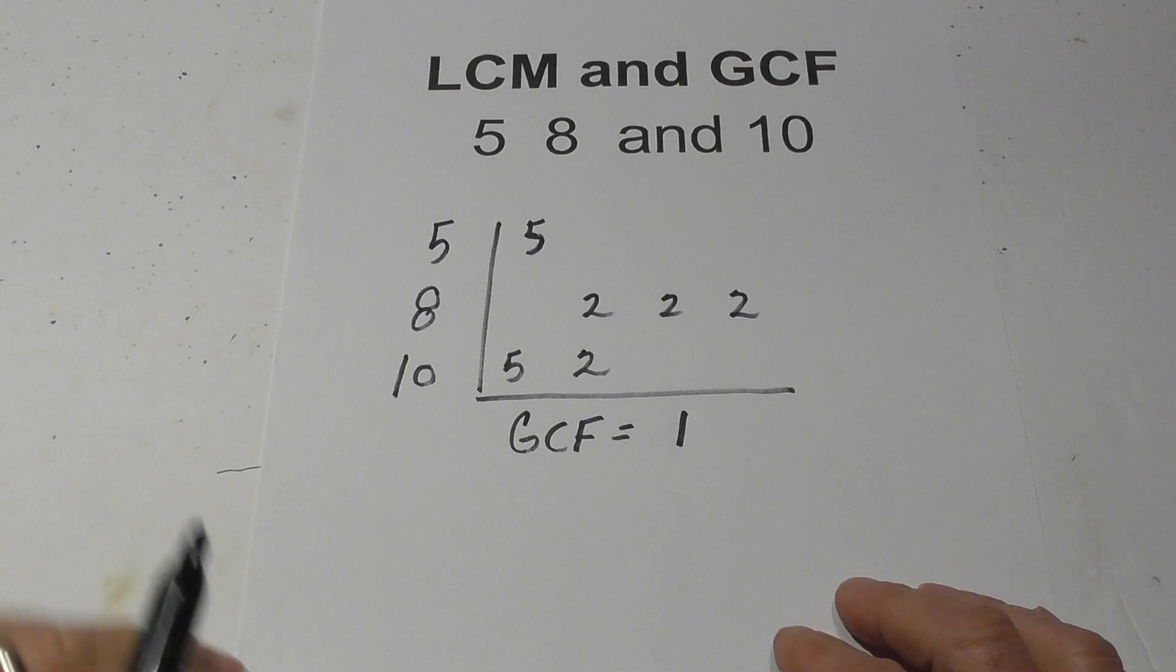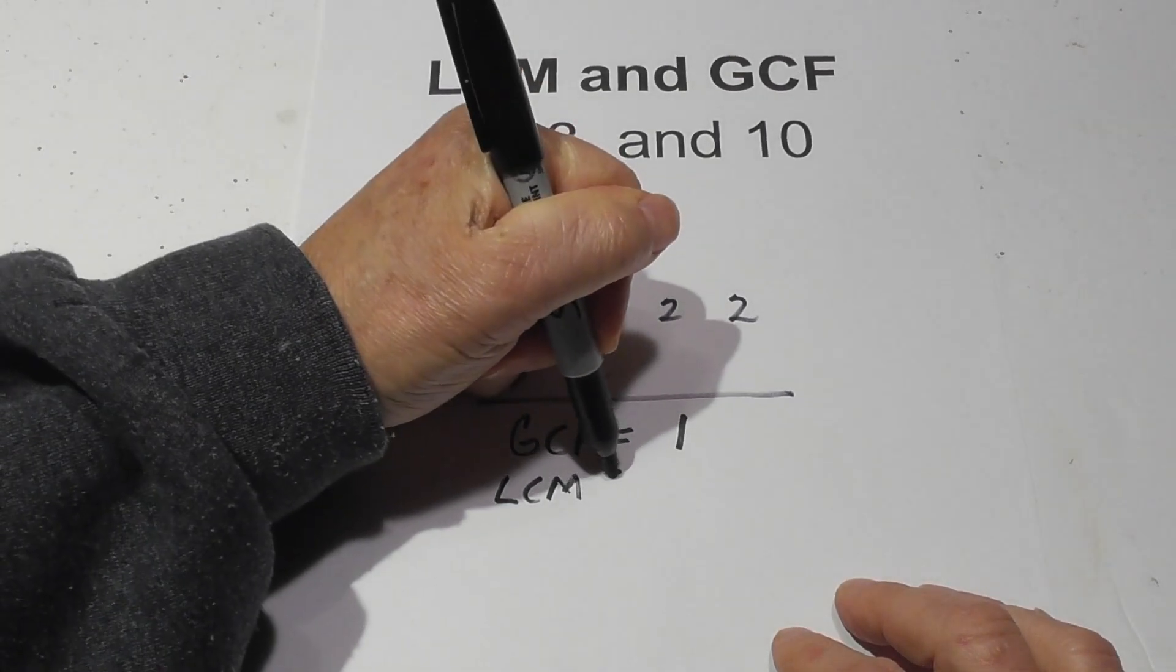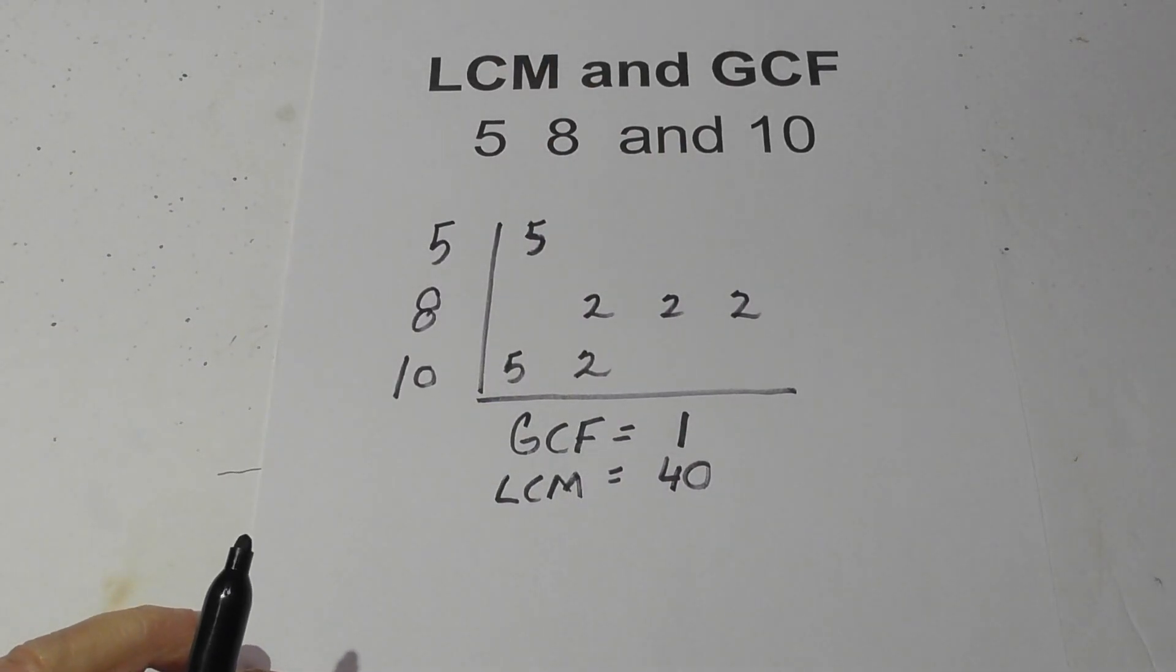Okay, I hope that helps. And so, in summary, the LCM equals 40, and the GCF is 1. Thanks for watching.